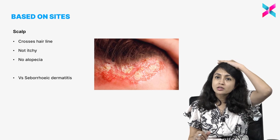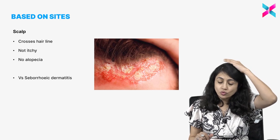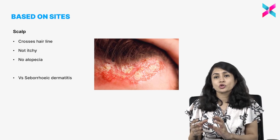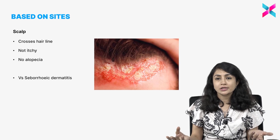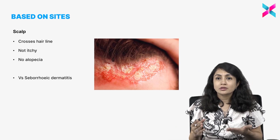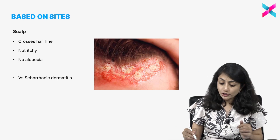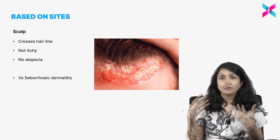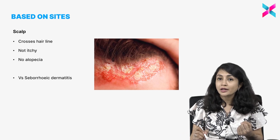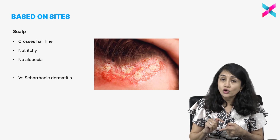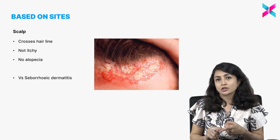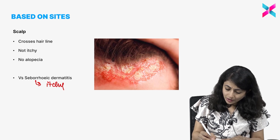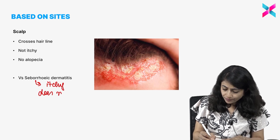Sometimes psoriasis will affect only the scalp. When it affects only the scalp, it is difficult to differentiate it from seborrheic dermatitis because seborrheic dermatitis also presents with scaling on the scalp. The difference is that psoriatic plaques will usually cross the hairline, whereas seborrheic dermatitis is limited to the hair. Psoriasis will not be itchy and will not have any alopecia associated with it. Seborrheic dermatitis also may not have alopecia, but it is itchy and it does not cross the hairline.